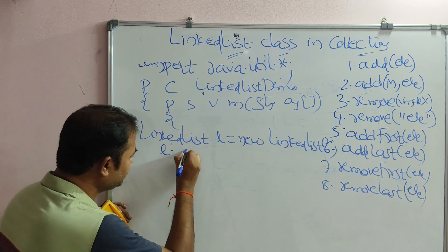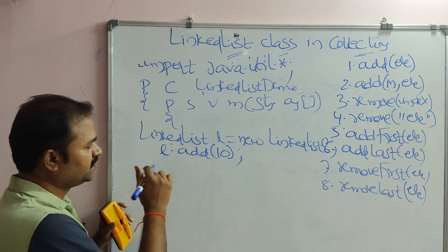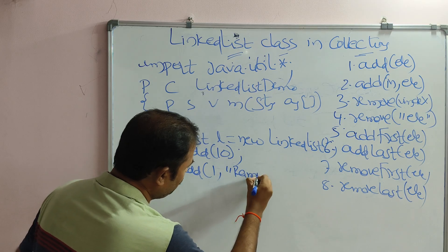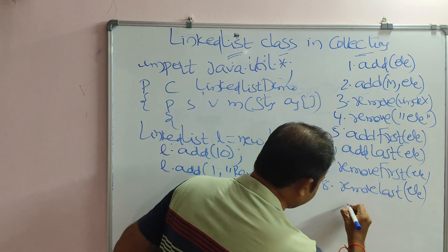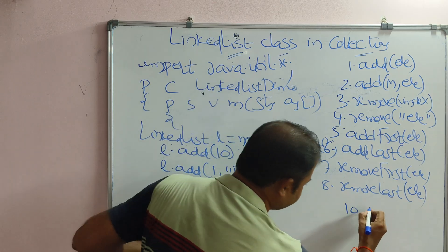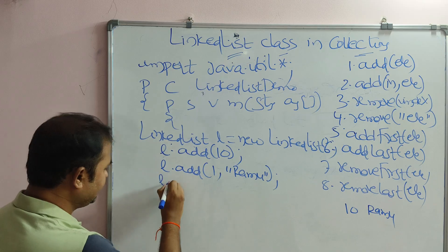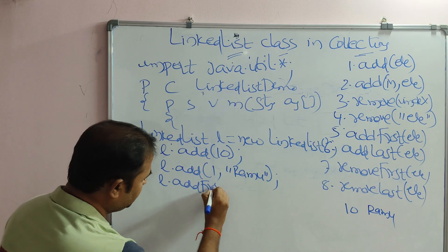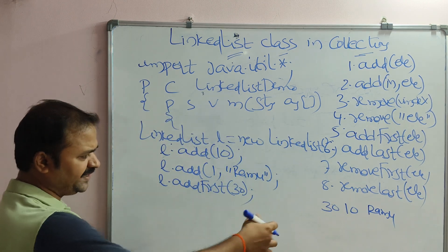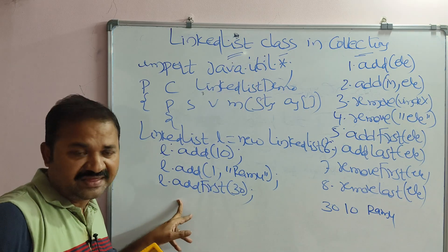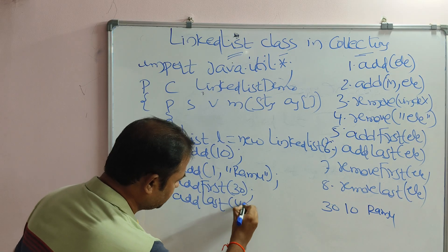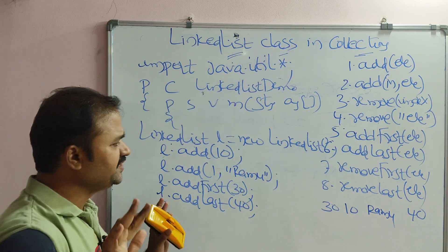First, let us use the add method: L.add(10). Next, L.add(1, "RAMU") adds "RAMU" at index 1, so the list becomes [10, RAMU]. Then L.addFirst(30) adds 30 at the beginning, so the list becomes [30, 10, RAMU]. Next, L.addLast(40) adds 40 at the end. If we display the list now, the output will be [30, 10, RAMU, 40].